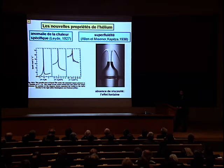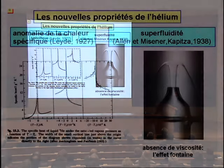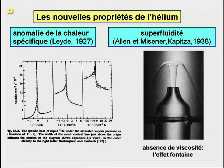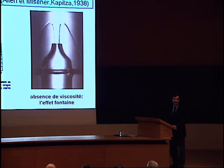Les propriétés quantiques de l'hélium furent découvertes d'abord dans l'expérience de 1927, qui avait mis en évidence le comportement anormal de la chaleur spécifique en dessous d'une certaine température. Dix ans plus tard, les expériences d'Allen, Meissner et de Kapitza ont montré que, dans le même domaine de température, l'hélium perd sa viscosité.